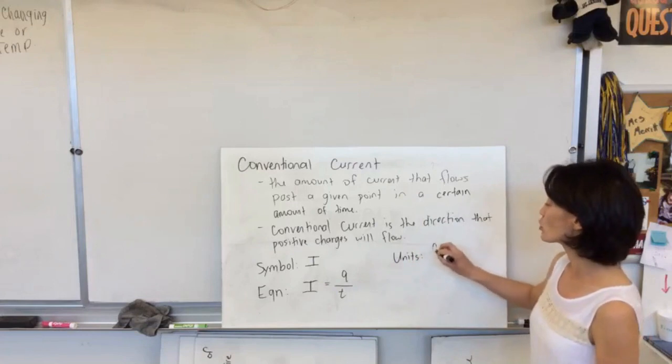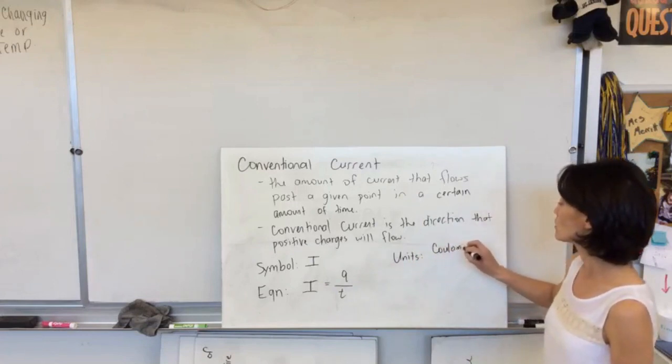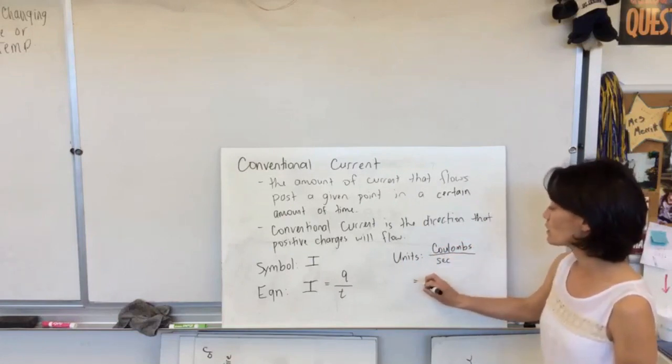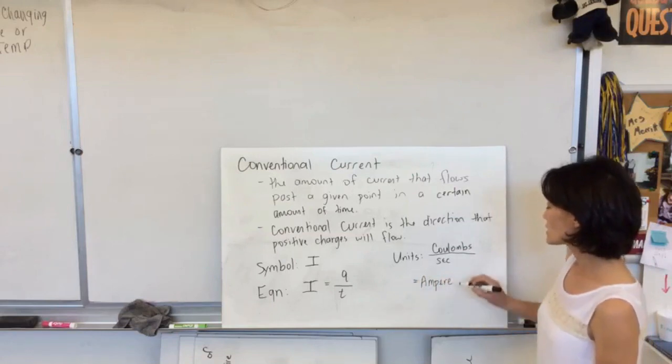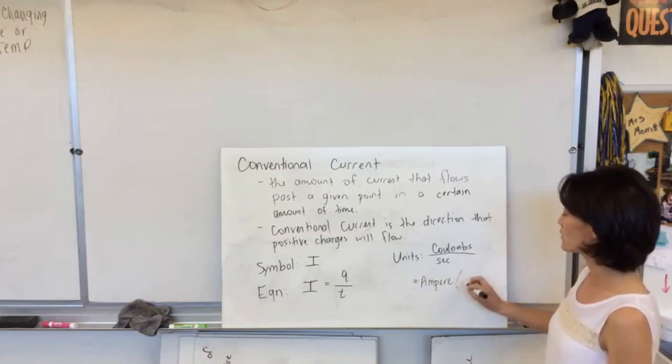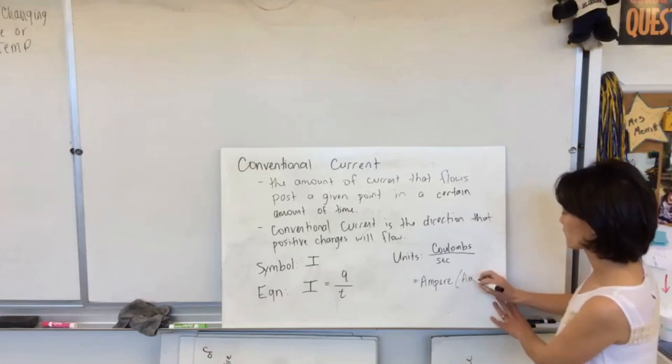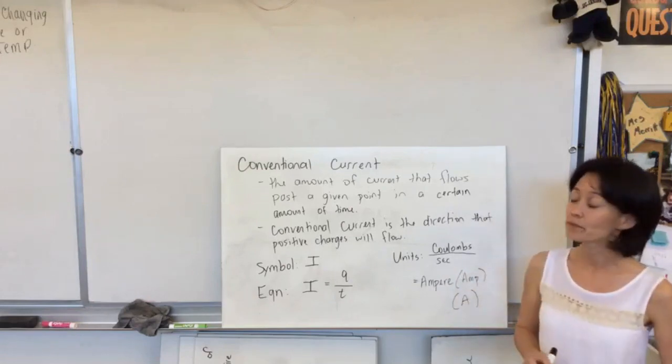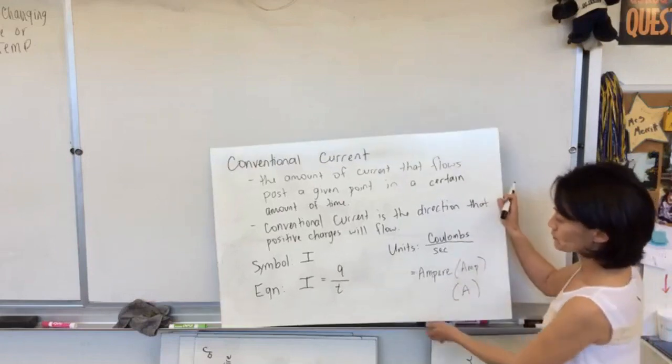charge is measured in coulombs, and t is measured in seconds. And so coulombs per second becomes a new unit called an ampere. And sometimes it's abbreviated as an amp, or sometimes we just abbreviate it as a capital A. So let's just go through one example of current.